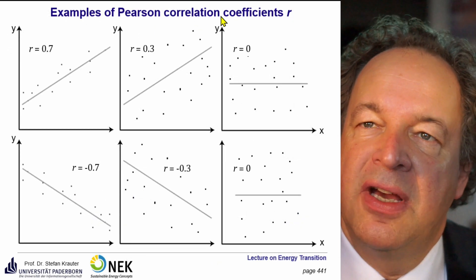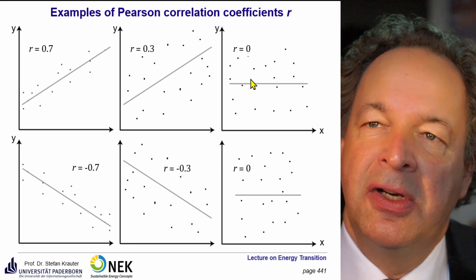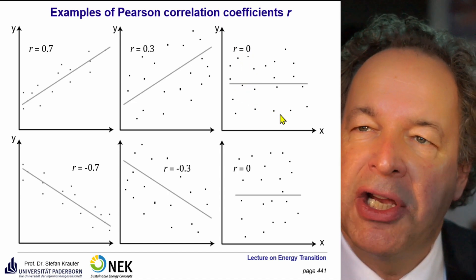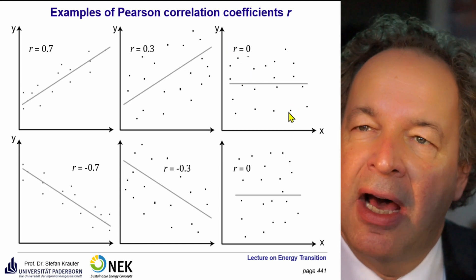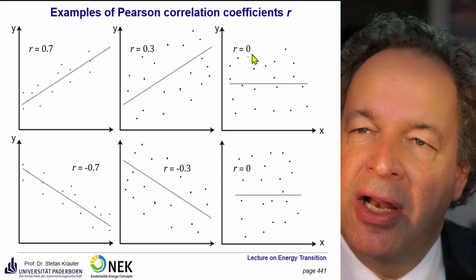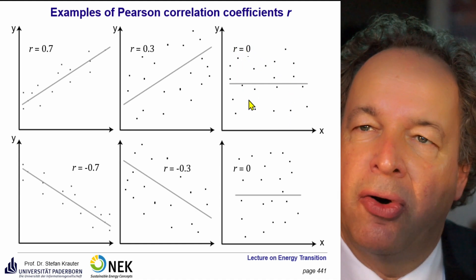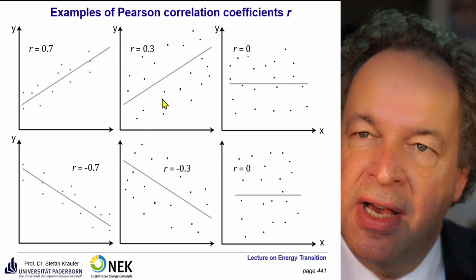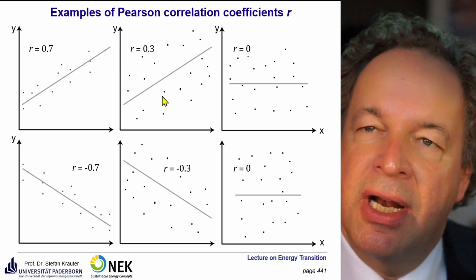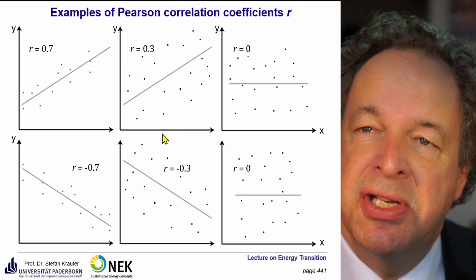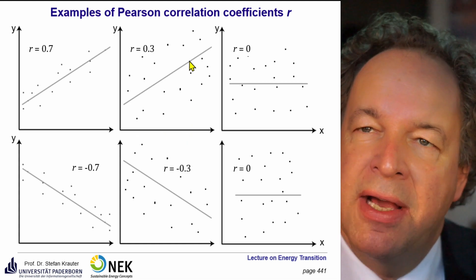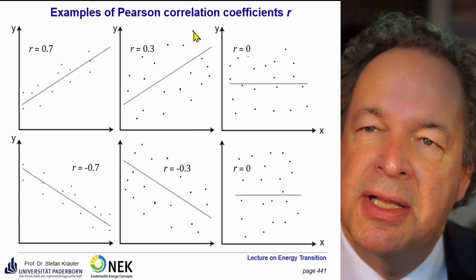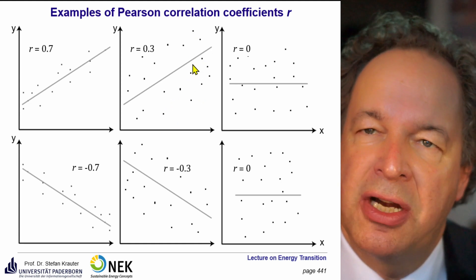Here are some examples for the correlation coefficients. On the upper right, we see no correlation — x and y are completely independent, so the values are scattered all over the quadrant. If you have a small correlation, for example r = 0.3, you see a tendency: if x goes up, y goes up also — not strictly, there's a large tolerance and deviation, but in general.